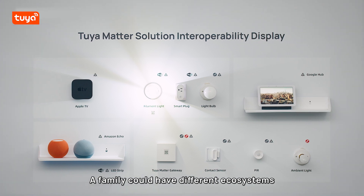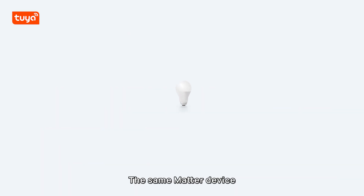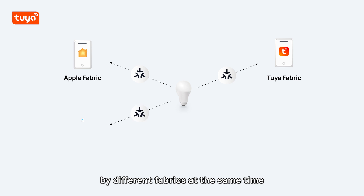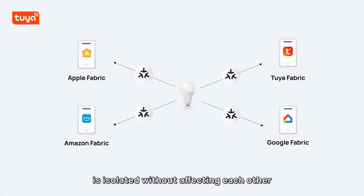A family could have different ecosystems and multiple fabrics, and a device could also join multiple fabrics. The same Matter device can be connected and controlled by different fabrics at the same time, and the data between each fabric is isolated without affecting each other.